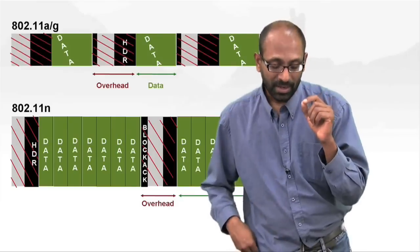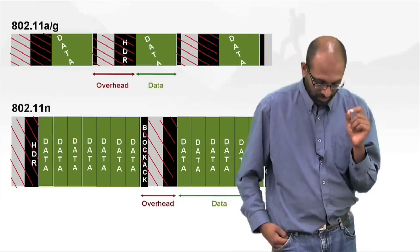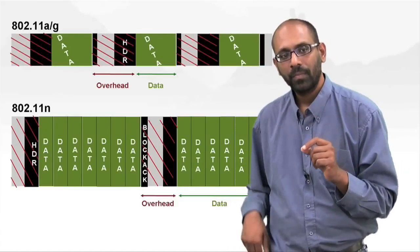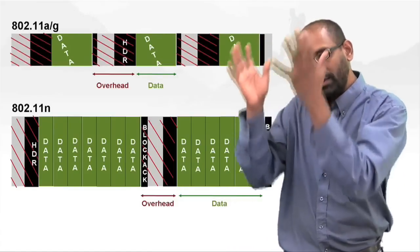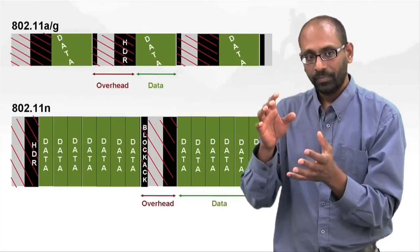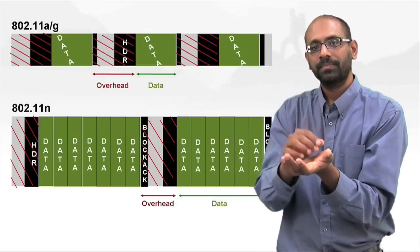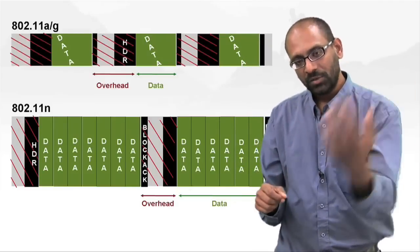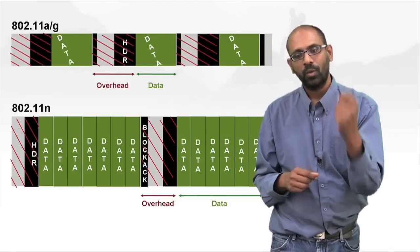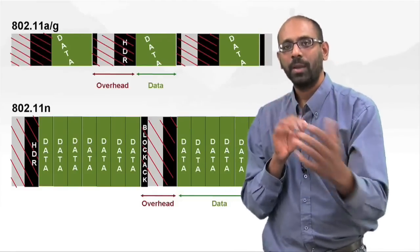With 802.11n, turns out there's a really interesting way of minimizing the amount of contention overhead. So what you do from a higher layer when a transmitter receives a number of frames, it packs all of these, and once it wins access to the channel by means of a contention round, it transmits not one frame but a whole bunch of frames back to back.